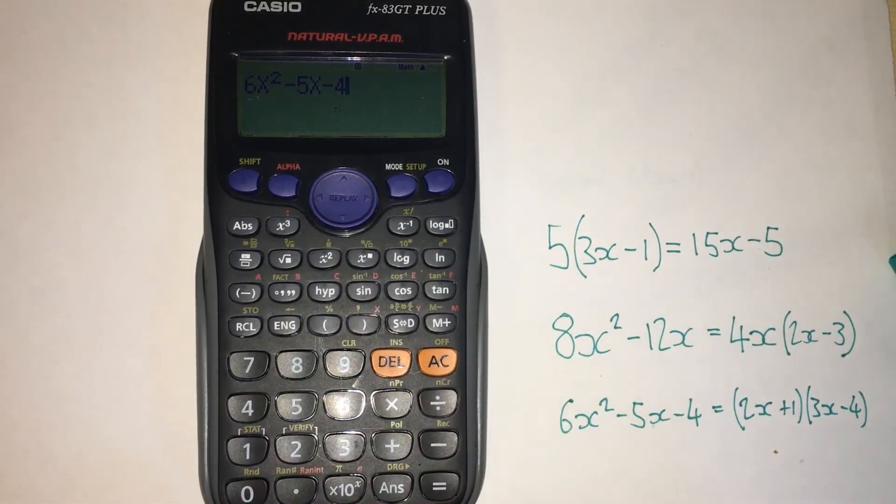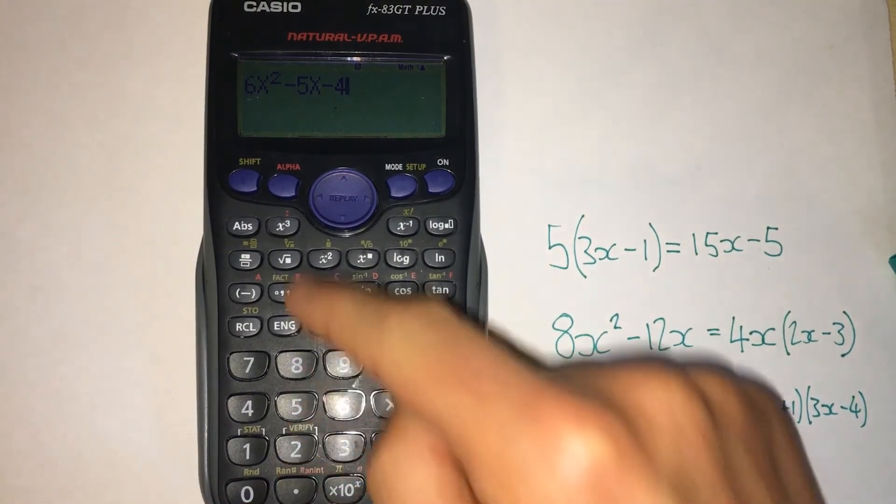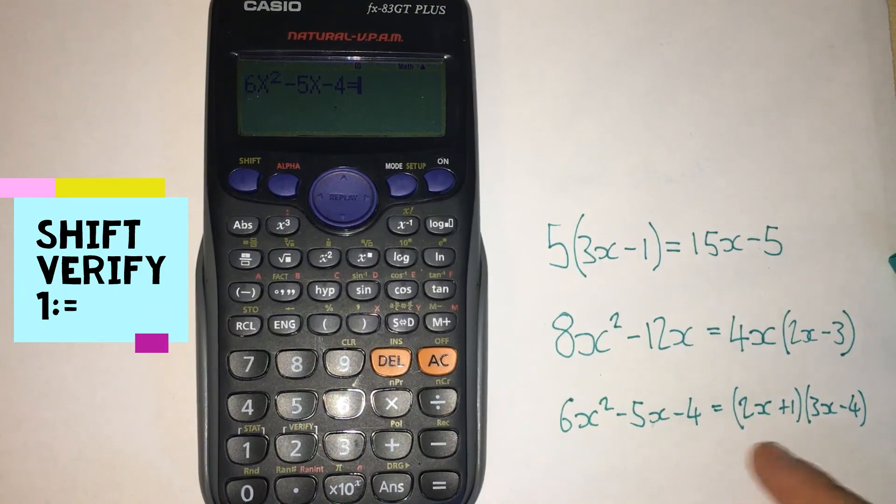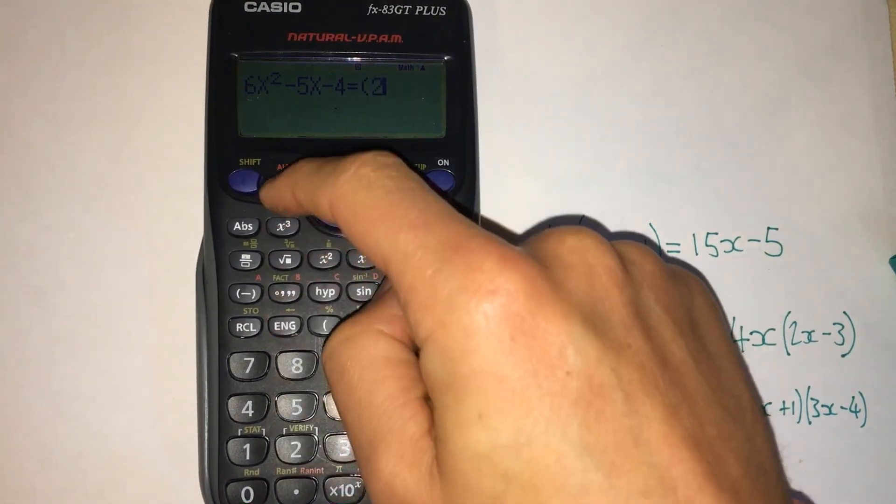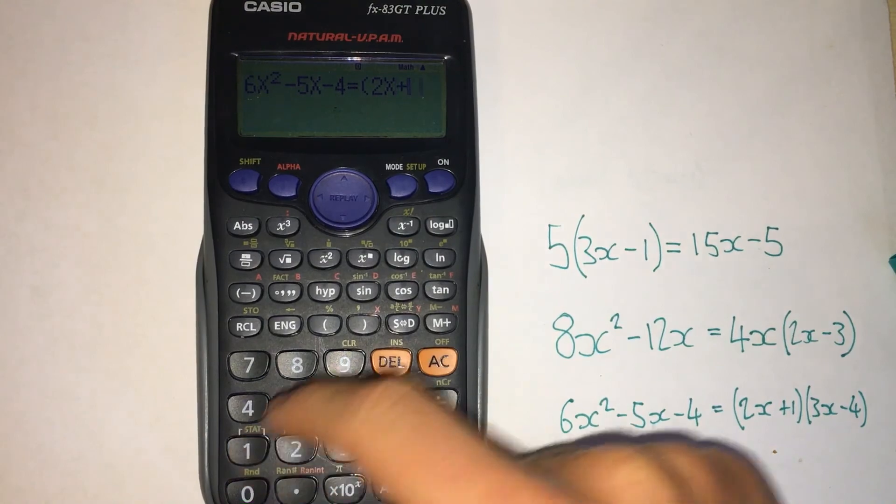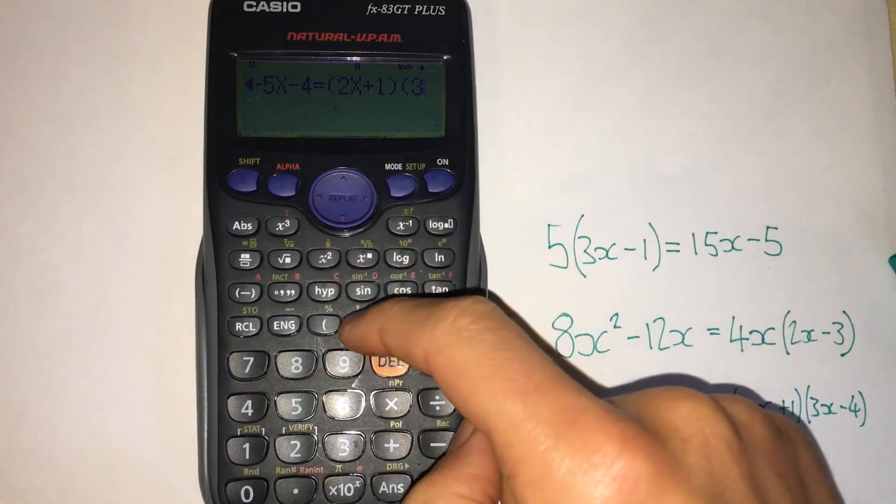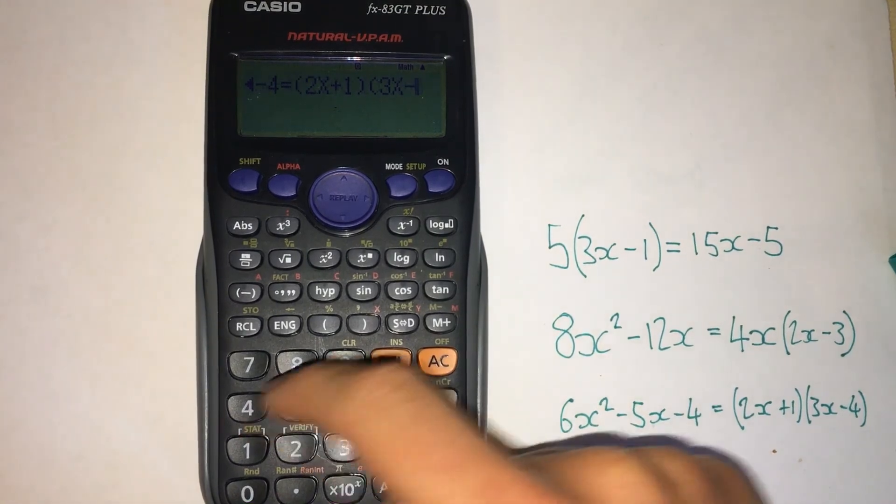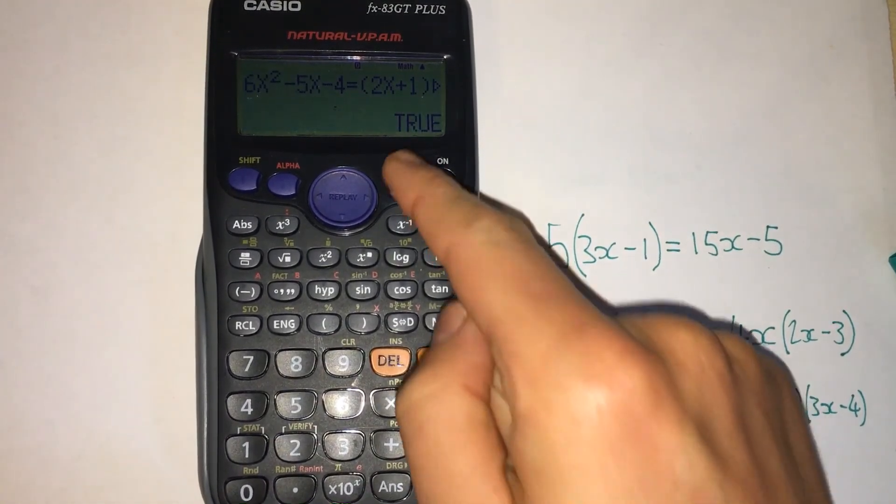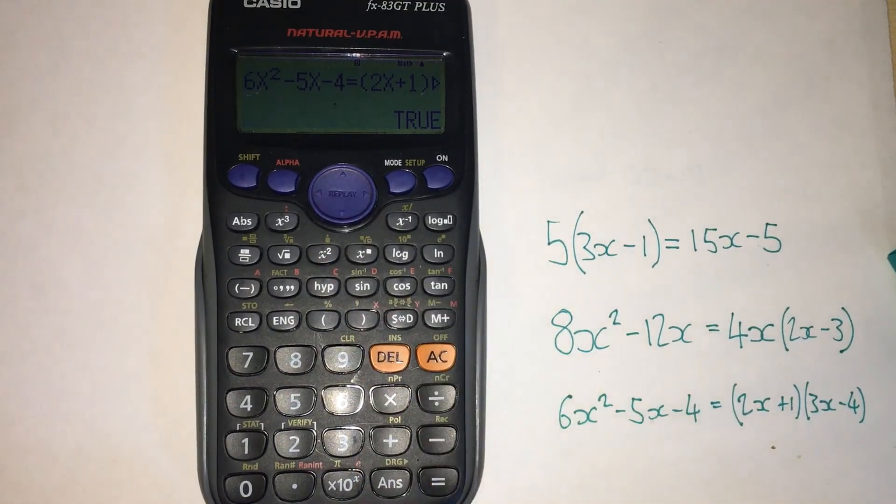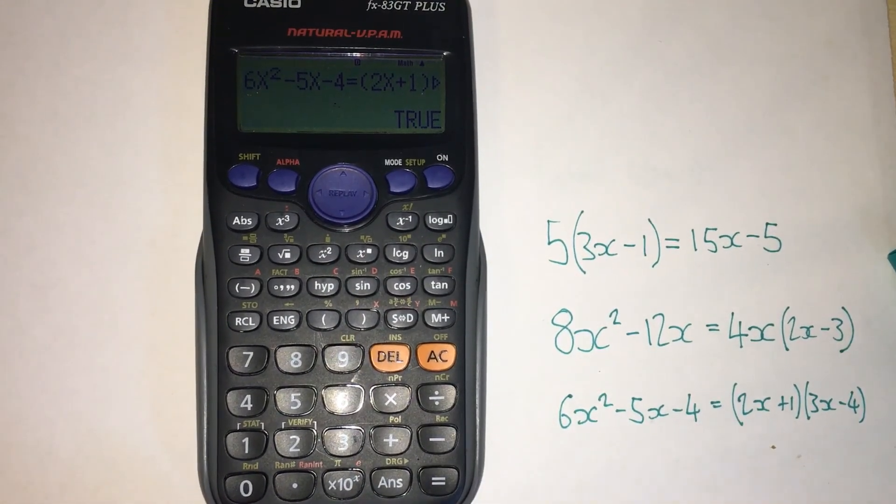And not this equals, remember verify mode: shift, press number two, then it's number one. Type in this side, brackets, two, alpha function, x plus one, close the brackets, open the second set of brackets, three, alpha function, x, take away four, close brackets, equals, and it's true. This is a great little calculator hack for a calculator exam.